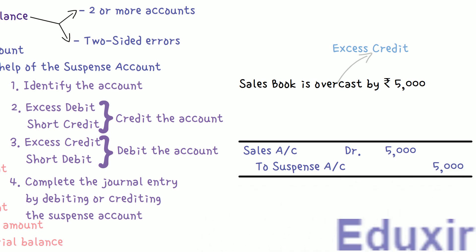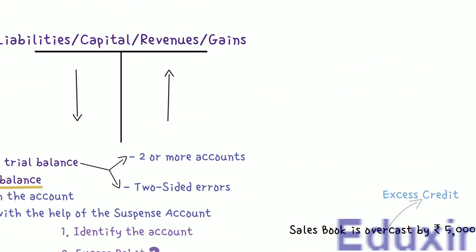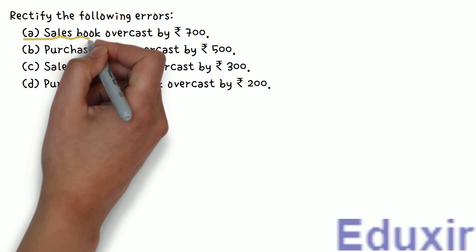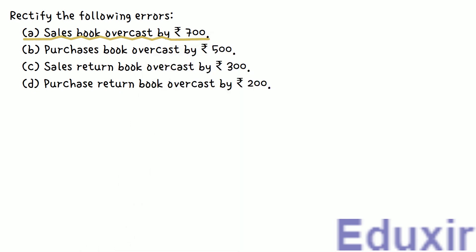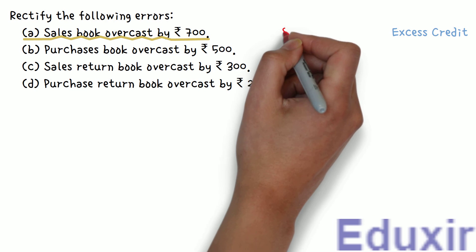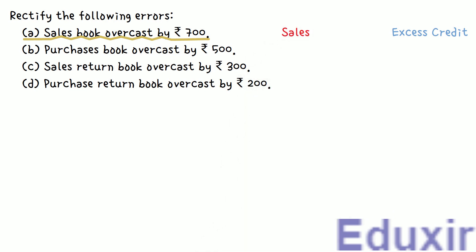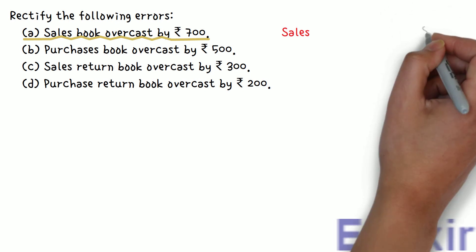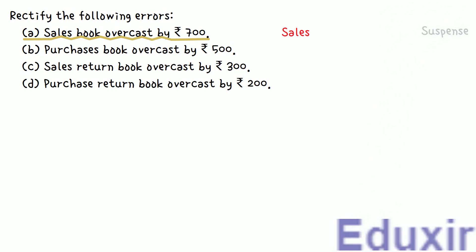Now let us proceed with the analysis of each error in the given problem. The first error: the sales book is overcast by 700 rupees. Note here that it is only the sales account that is erroneously overcast, so this is a one-sided error. The sales account is a revenue account, so all entries belonging to the sales account will be credited. When you total, the sales account will have a credit balance, and the overcasting results in excess credit. So to rectify this error, we should debit the sales account. As this is a one-sided error, the other account that needs to be credited is the suspense account.